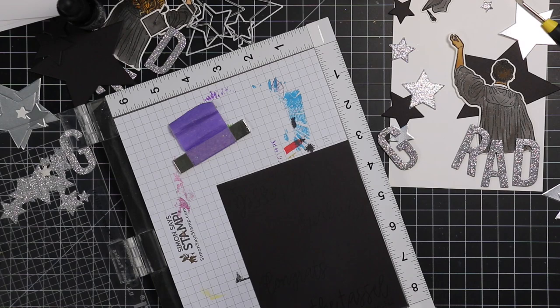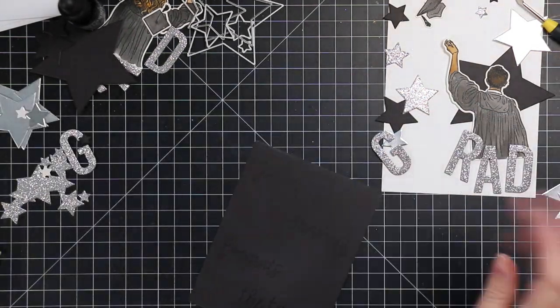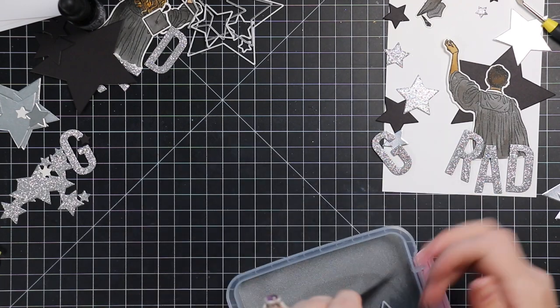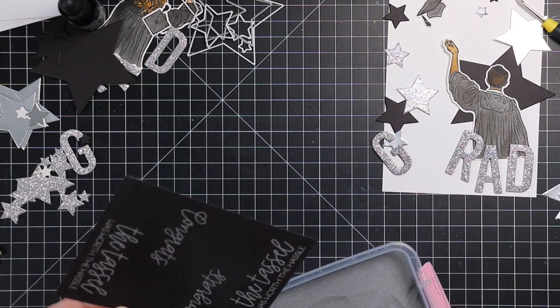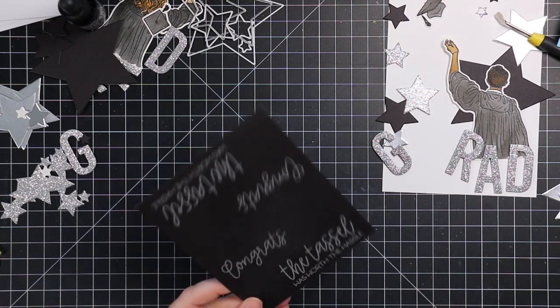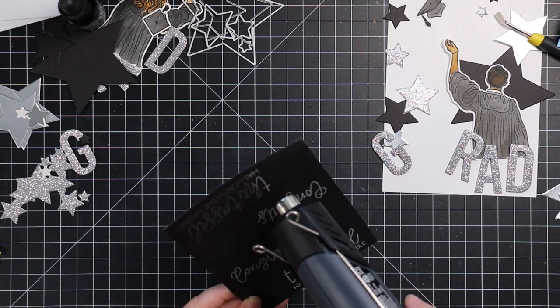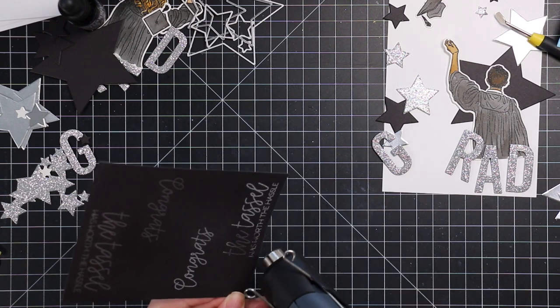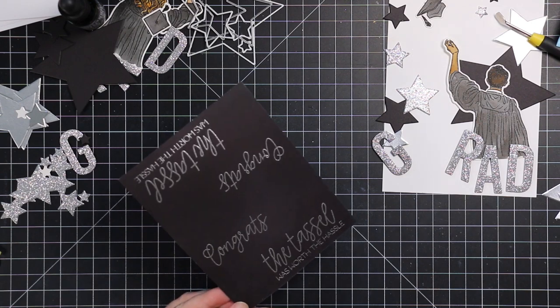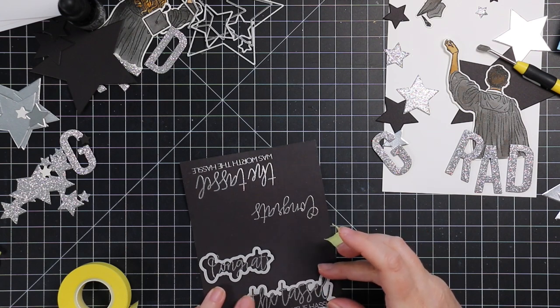For the sentiments, these are also from the cap and gown stamp set. I just stamped them onto some black cardstock with clear embossing ink. And then I'm using silver embossing powder. I almost used white because that's just my go-to. White heat embossing on black cardstock looks fabulous. But I'm using silver this time. And there's something about the silver. When the light isn't hitting it, you almost can't see it very well. But then the minute the light hits it and you get that reflection with the silver metallic, it looks really nice.